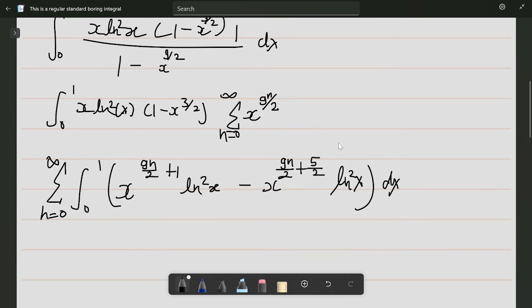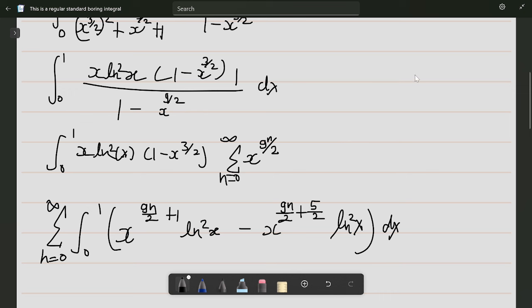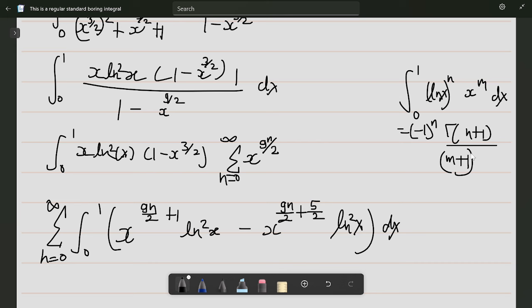Now let's integrate. This is a standard form. Let me show you: the integral from 0 to 1 of (ln x)^n times x^m dx equals (-1)^n times n! times Γ(n+1)/(m+1)^(n+1).